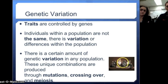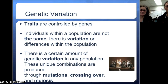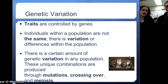Looking at our cats here, these are all from the same parents. We can see differences in their fur colors, and they probably have some differences in paw size, ear size, etc. These are all different variations of their traits. There's a certain amount of genetic variation in any population, and these unique combinations are produced through mutations, crossing over, and genetic recombination in meiosis. This is genetic variation among individuals of the same species.